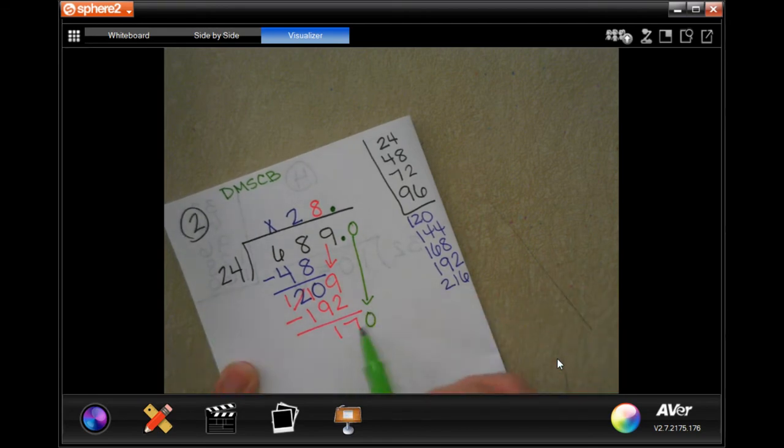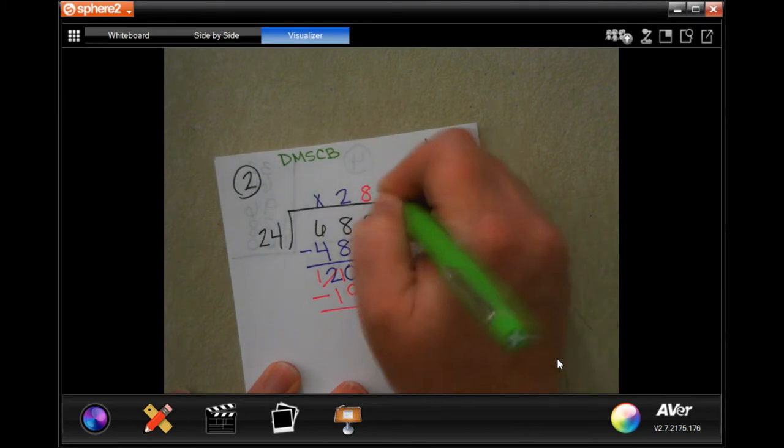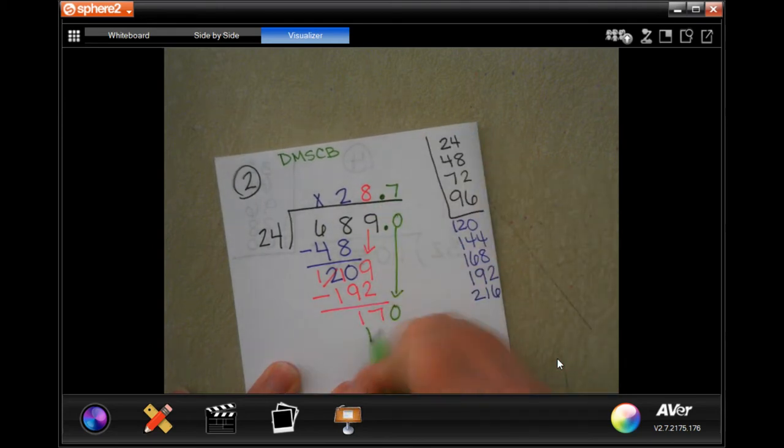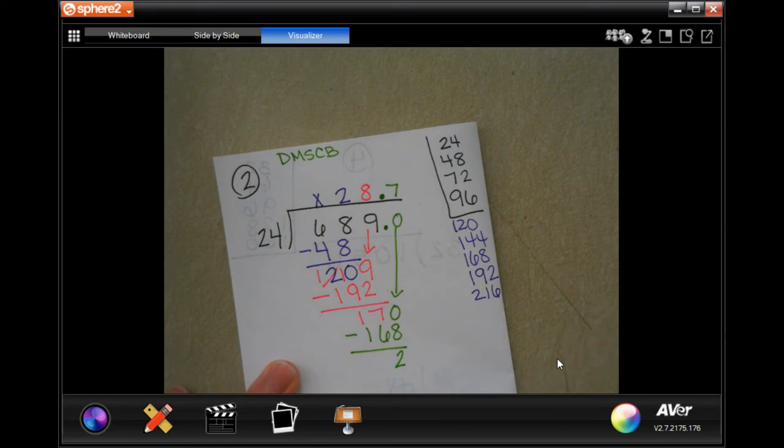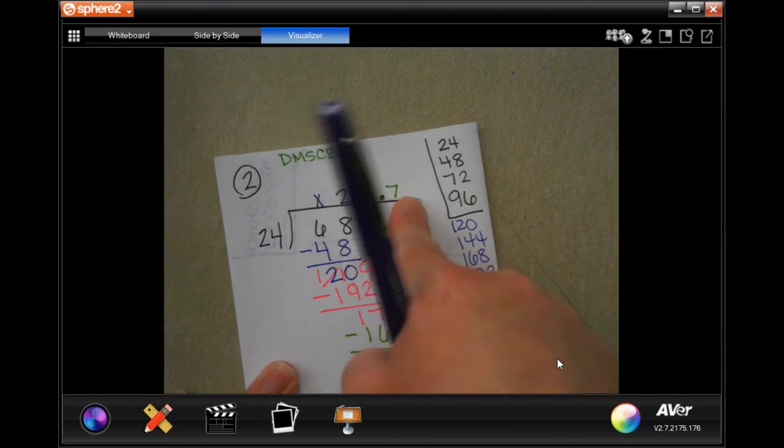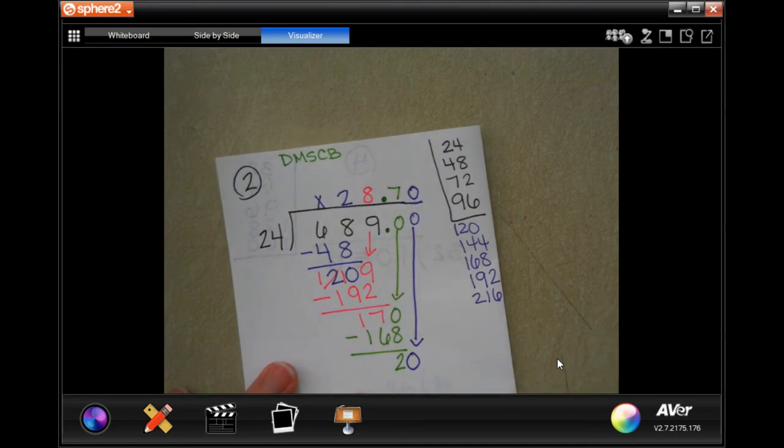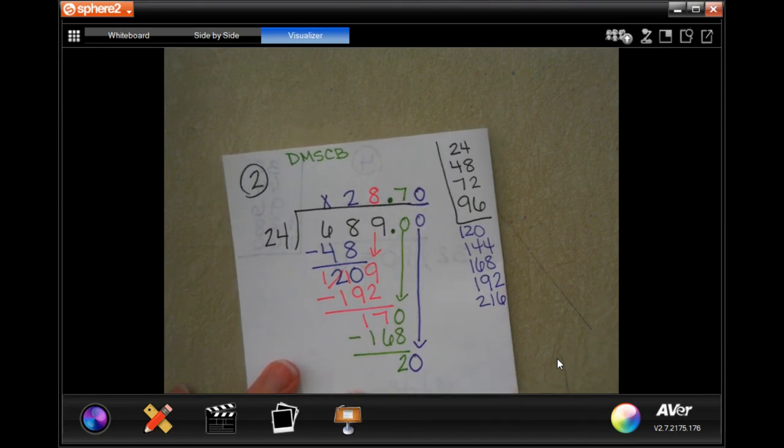So, 24 into 170, I think the closest we're going to get is going to be 168. So, 168 was 7 times. 7 times 24 was 168. Subtract. I'm going to get 2. Now, it wants us to go to the 100th place today, so I'm going to extend that out a little bit. Put one more 0 for the 100th place, because this is the 10th. One more place is the 100th. Put my 0 down, and 24 is not going to go into 20. 0. There we go. Now, it's really as far as you have to go, because it just wants it to the 100th place. So, that was number 2.